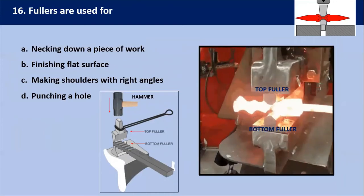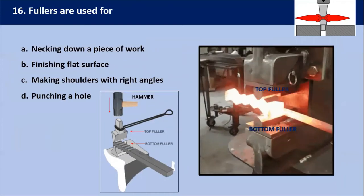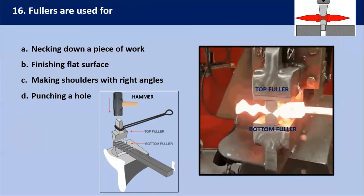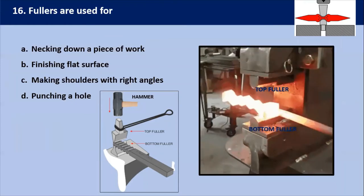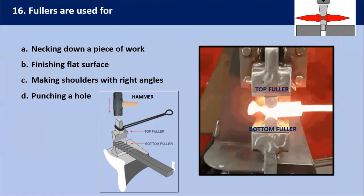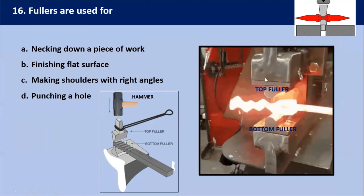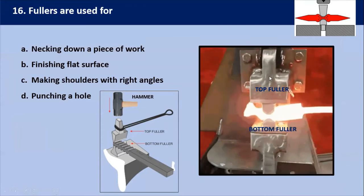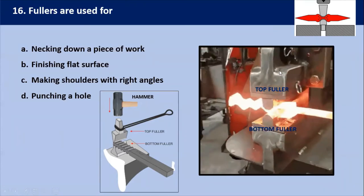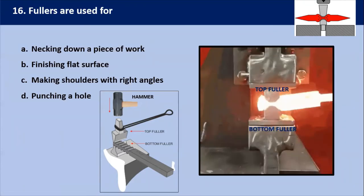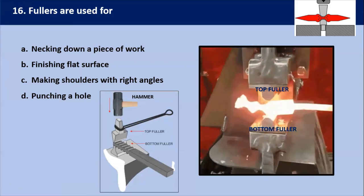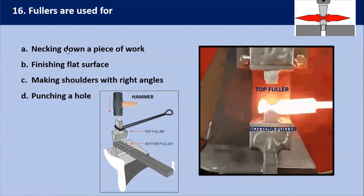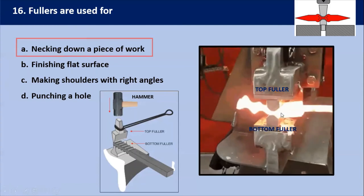Fillers are used for? Fullering is a forging operation where a bar is elongated between two fullers along its length to form a nick. As shown in this diagram, there are top and bottom fullers, and we give the blow over the heated metal work piece, which generates a necking-type operation. That's why fillers are used for necking down a piece of work.